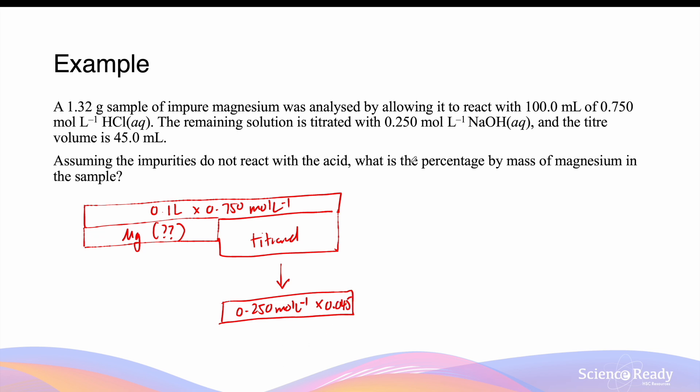The reaction here during the titration is hydrochloric acid plus sodium hydroxide produces sodium chloride and water. The number of moles of sodium hydroxide is 0.25 mol per liter multiplied by 0.045 L, which yields a value of 0.01125 moles of sodium hydroxide. Since the ratio between hydrochloric acid and sodium hydroxide is 1 to 1, the moles of hydrochloric acid that reacted is also the same number of moles. This is due to the 1 to 1 ratio.